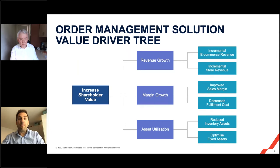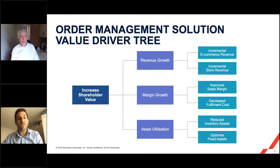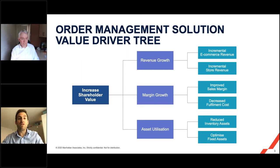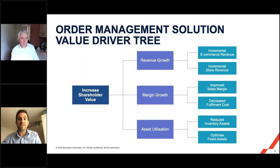Whilst we use this framework for our own Manhattan Active Omni solution, the approach and principles can be applied to other order management solutions as well. The framework starts with the premise that the overall goal of any business is to increase shareholder value. From there we focus on three areas: first, revenue growth - how will an OMS enable improvements to a retailer's revenue; second, margin growth - can order management improve a retailer's ability to grow or maintain margin; and third, asset utilization - how can an OMS help squeeze every ounce of value from existing assets.